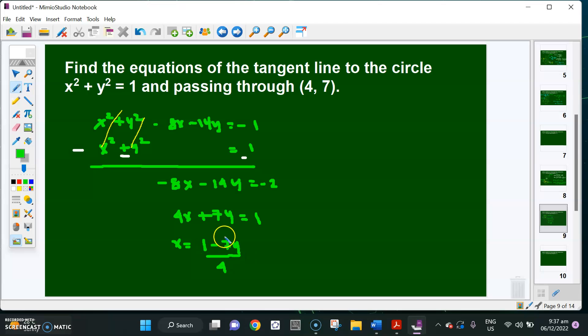And what I'm going to do with this expression is substitute it into the equation of the unit circle. So instead of x squared, I'm going to have (1 minus 7y over 4) squared plus y squared equals 1.